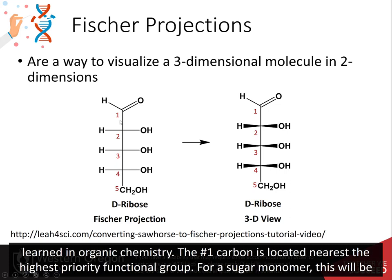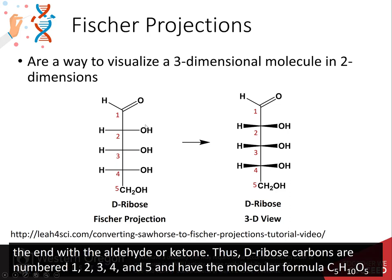The number one carbon is located nearest the highest priority functional group. For a sugar monomer, this will be the end with the aldehyde or the ketone. Thus, D-ribose carbons are numbered 1, 2, 3, 4, and 5, and have the molecular formula C5H10O5.